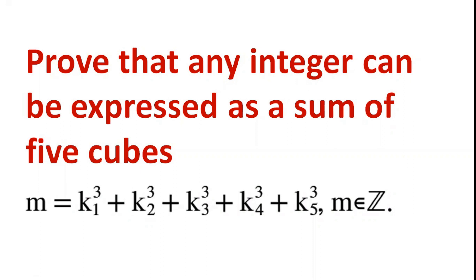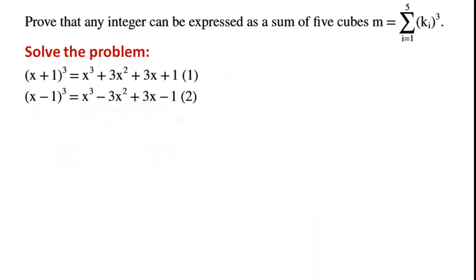Prove that any integer can be expressed as a sum of 5 cubes. (x+1) cubed can be written as x cubed plus 3x squared plus 3x plus 1. (x-1) cubed can be written as x cubed minus 3x squared plus 3x minus 1.